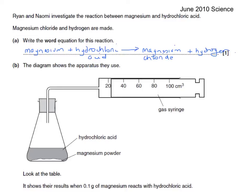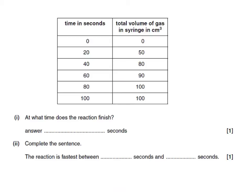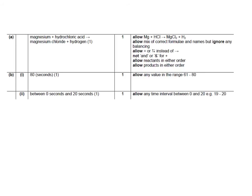The diagram shows the apparatus they use. Well, what they've got is magnesium powder. They say they've got 0.1 grams of magnesium powder reacting with hydrochloric acid. And there's a gas syringe collecting the gas. We're asked to say what time the reaction finishes. Well, that'll be at the point at which no more gas is made. The safest time to say would be at 80 seconds because that's reached the maximum and it doesn't go anymore after that. And complete the sentence. The reaction is fastest between 0 seconds and 20 seconds. And that's because between those two times, we've got 50 cubic centimetres, whereas between the next 20 second period, there's only 30 extra.